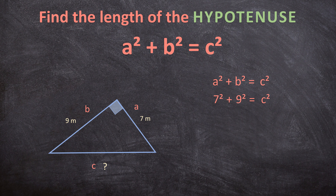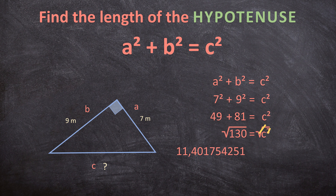7 squared is 49, and 9 squared is 81, so 49 plus 81 equals C squared. Adding those together: 49 plus 81 is 130, so 130 equals C squared. To get C we take the square root of 130. This is not something you need to know by heart — you can use a calculator. The square root of 130 is 11.401754251, so C equals that value.